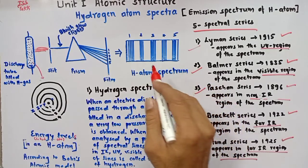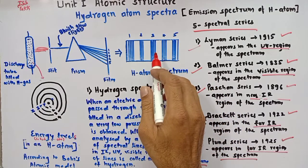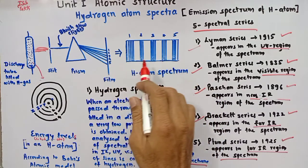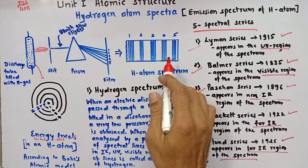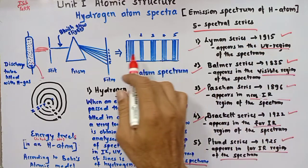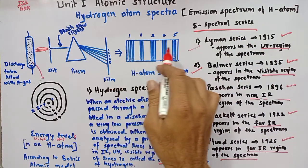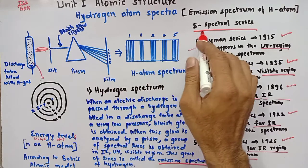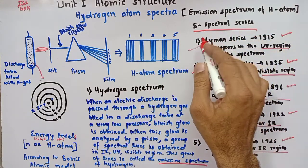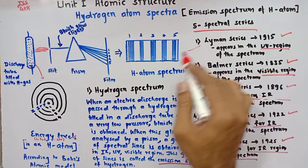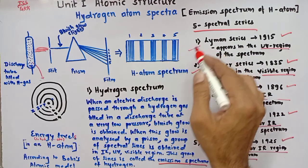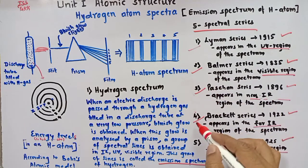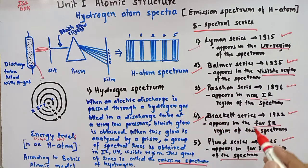It is very clear that the emission spectrum of hydrogen atom consists of several lines which can be grouped into five series called spectral series. These large number of spectral lines observed in the spectrum are grouped into five spectral series, named after the names of their discoverers as Lyman series, Balmer series, Paschen series, Brackett series, and Pfund series.